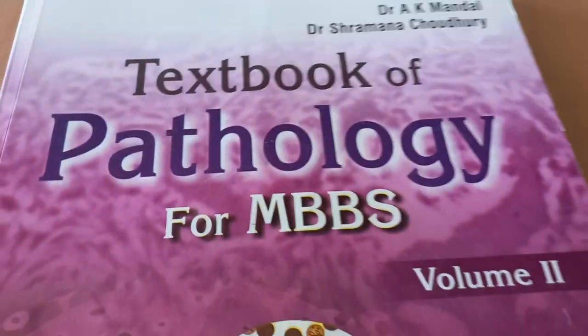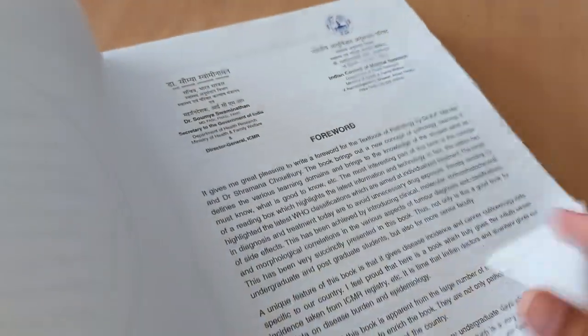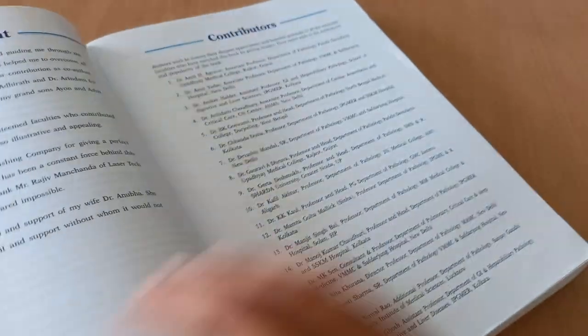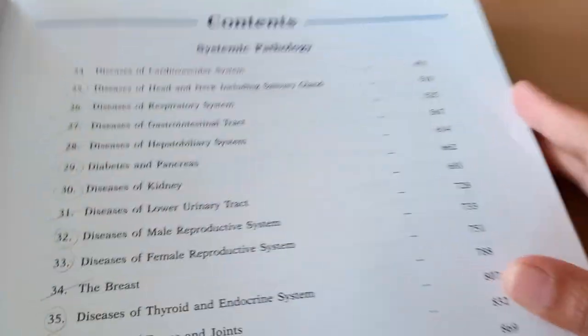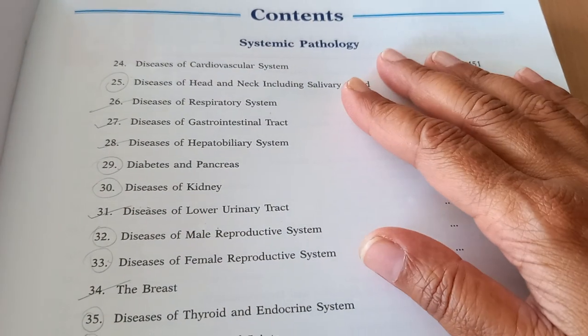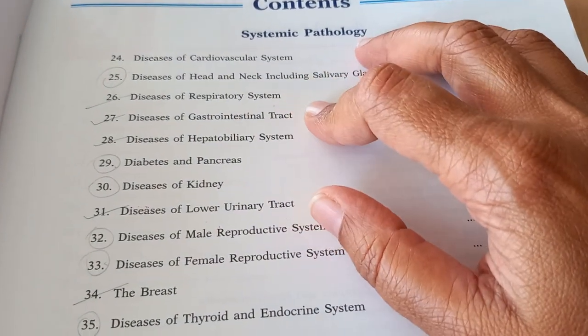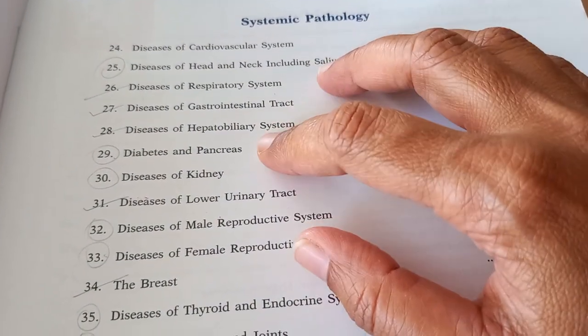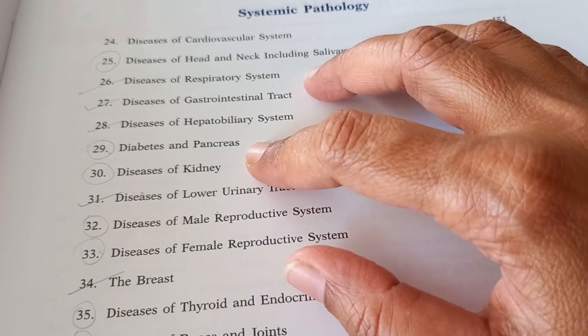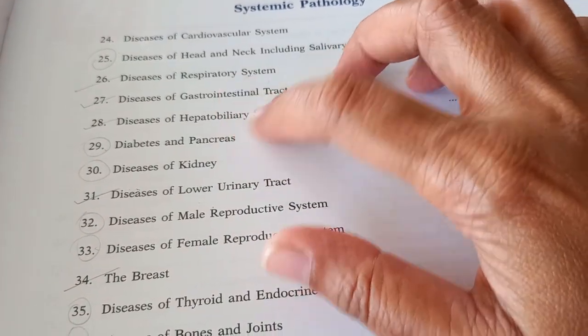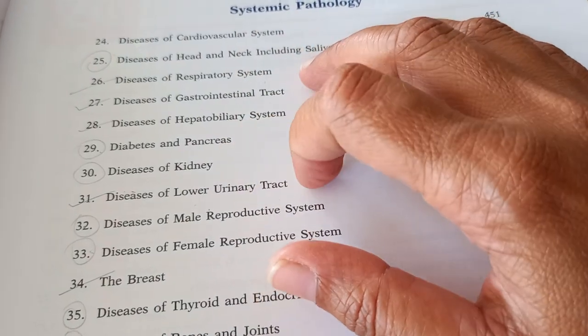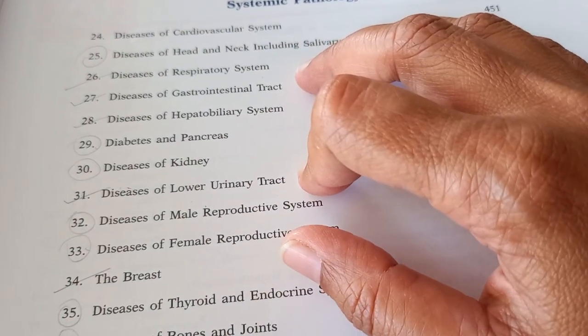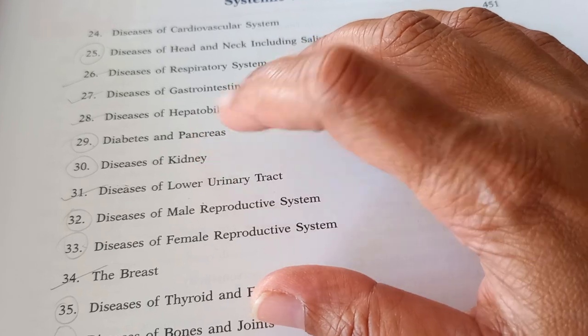Now, let's go to this volume 2 and explore. What are the contents of systemic pathology? You have the cardiovascular system, head and neck, respiratory system, GIT, hepatobiliary system, pancreas, kidney. This pancreas is not under hepatobiliary. So only the liver and gallbladder they are putting under that. Lower urinary tract. Kidney is the upper urinary tract.